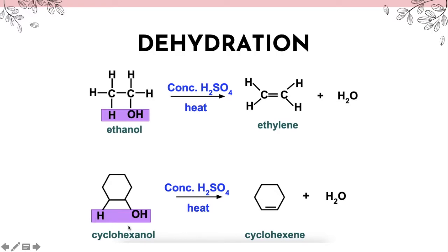For cyclohexanol, we remove the hydrogen atom and OH group from two adjacent carbons. The double bond is formed between the carbons from which hydrogen and hydroxide were removed.